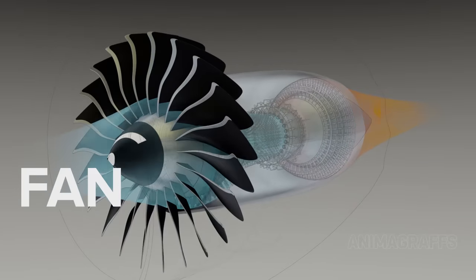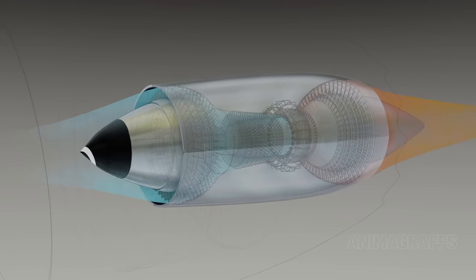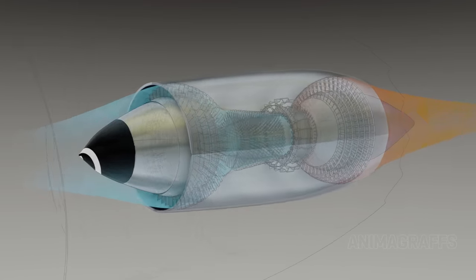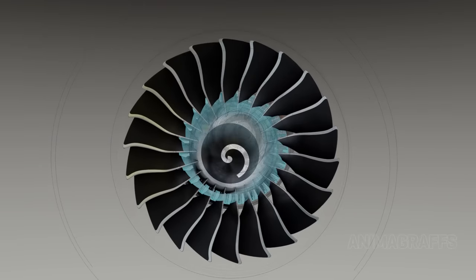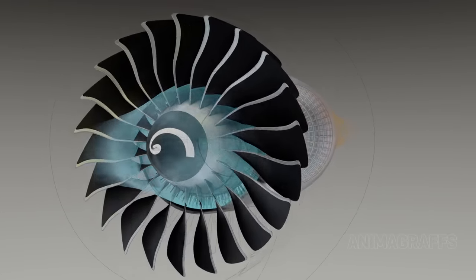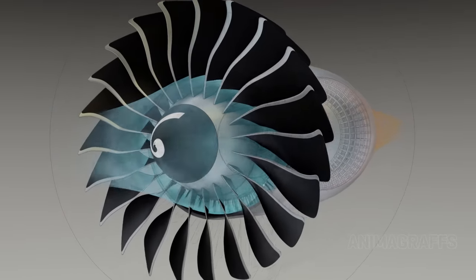The fan. Early jet engines were turbo jets, where all incoming air flows through the core. Most modern winged aircraft engines are turbo fans, where only a fraction of air enters the core or gas generator, and the resulting power turns a specially designed fan.